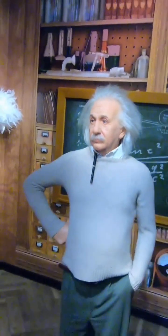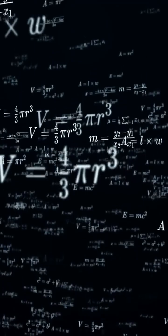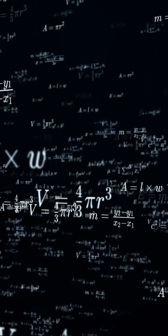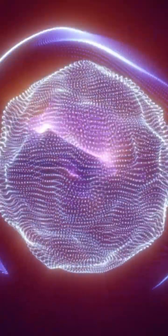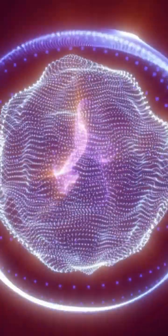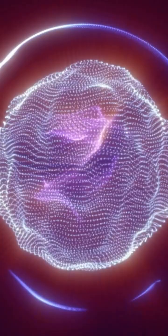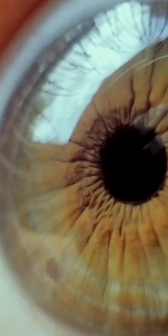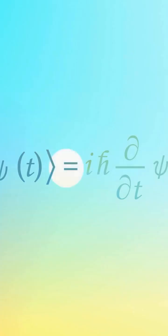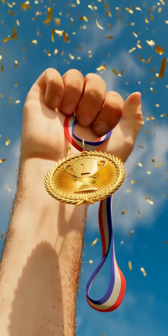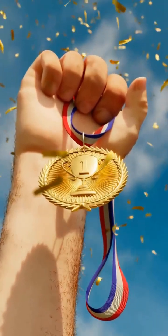Einstein's 1905 breakthrough was the special theory of relativity. Fast forward 20 years — Schrödinger knew of Einstein's work. He discovered the Klein-Gordon wave equation, a relativistic wave equation. But those strange solutions — negative kinetic energy — were too exotic. So Schrödinger published his non-relativistic wave equation instead. And that's how the Schrödinger equation became legendary.